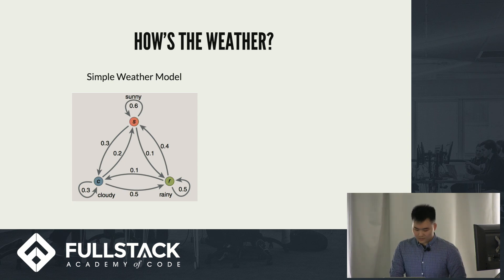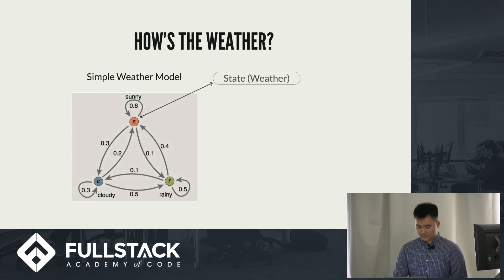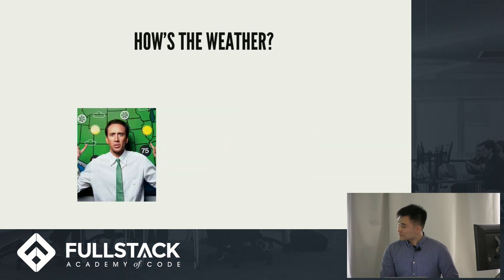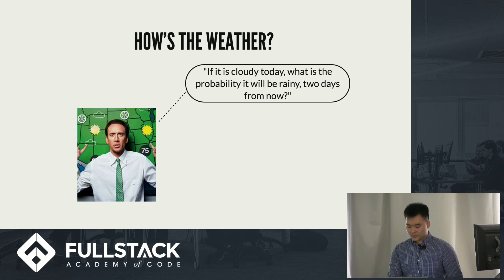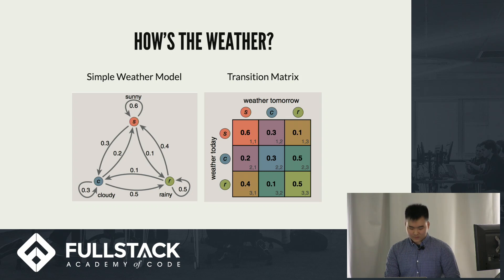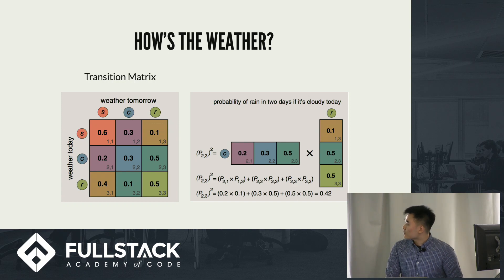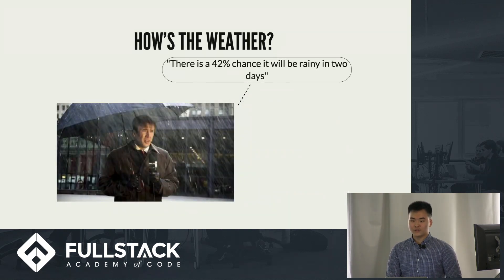This is a simple use case of a Markov chain — we have a weather model, as you can see. The states are sunny, cloudy, and rainy, with associated transition probabilities. So let's ask a question: if it's cloudy today, what is the probability it will be rainy two days from now? Using our weather model, we can create a transition matrix, as you can see to your right. We do our matrix operations and square it for two days, and the result gives us a 42% chance. So our weatherman can say there is a 42% chance it will be rainy in two days if today was cloudy.